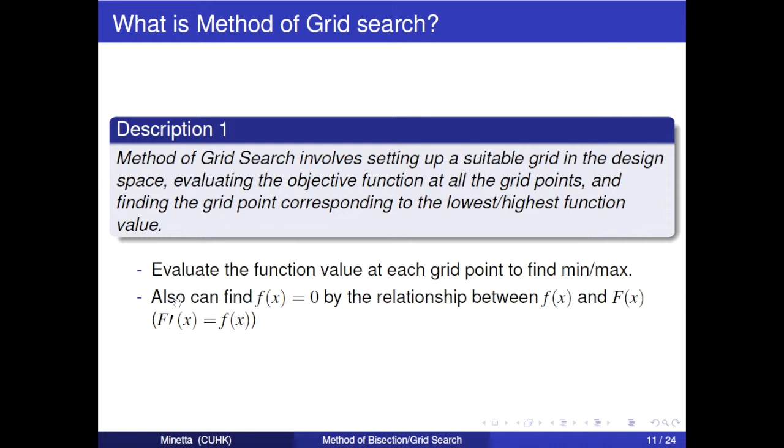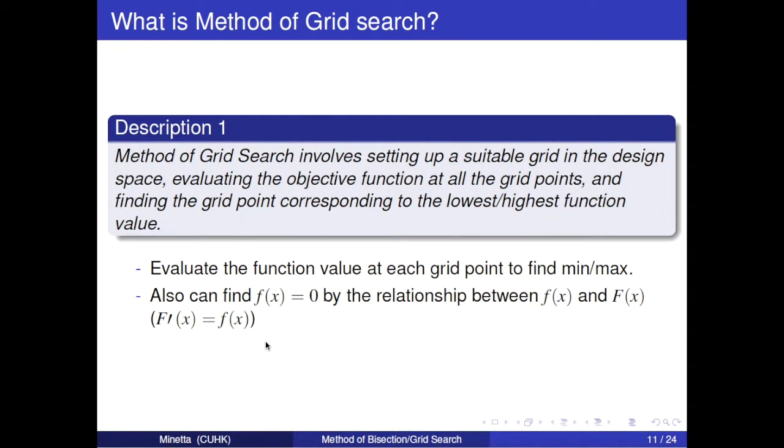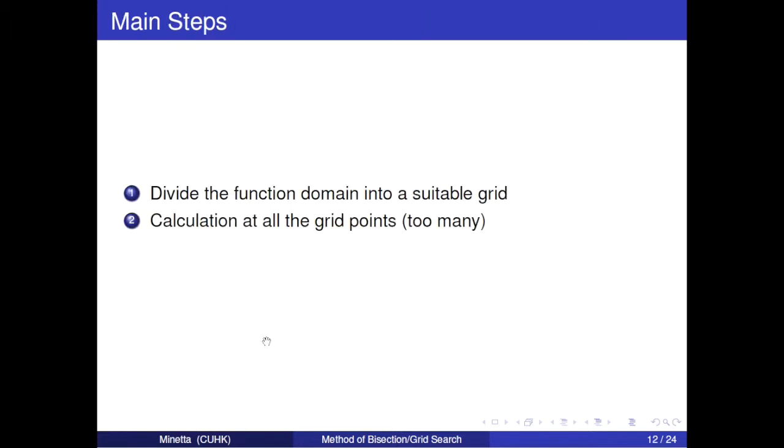Also, it can find f(x) equals 0 by the relationship between these two functions. Each of us has learned this equation in mathematical class. The main steps are easy to see but hard to do. First, we need to divide the function domain into a suitable grid, then do calculation at all the grid points. However, there are too many grid points.